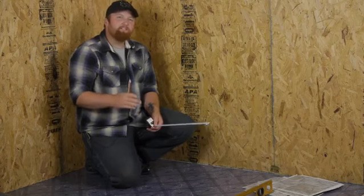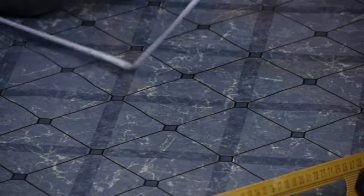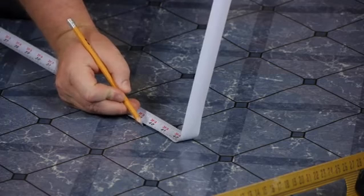The first thing we're going to do is find the exact middle of our room. We're going to measure the width and the length of the room, divide it in half, and mark a line.